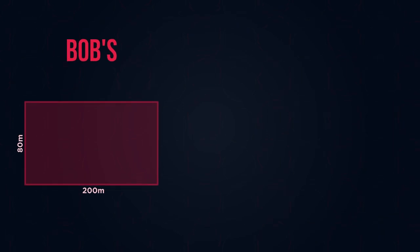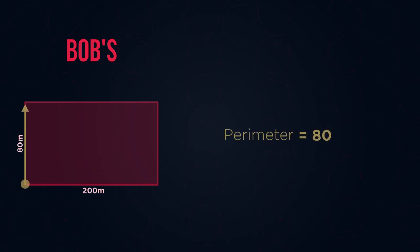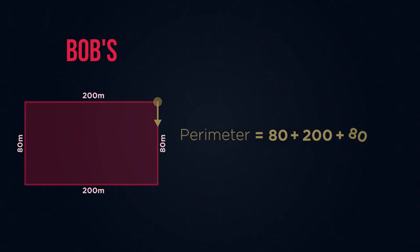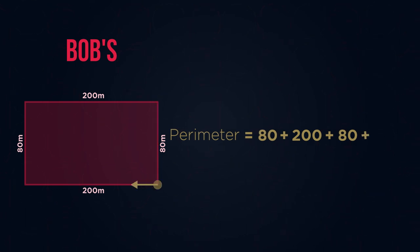Let's start by finding the perimeter of Bob's simple rectangular farm. Choose a starting point — I'm going to start in this corner and start adding up the sides: 80 metres, add 200 metres, add 80 metres, add 200 metres, which added together gives a perimeter of 560 metres.